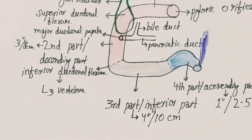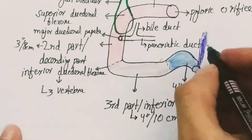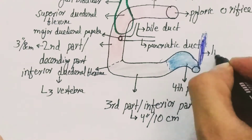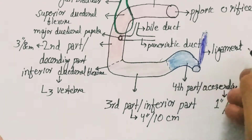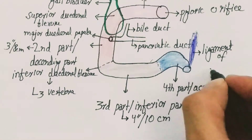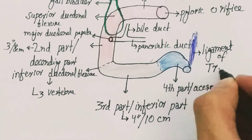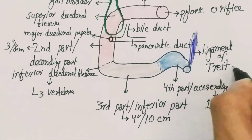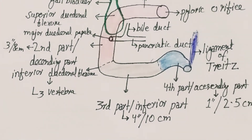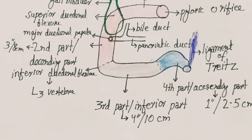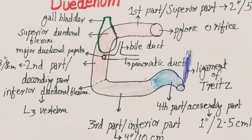The junction between the duodenum and the jejunum is marked by a ligament called the ligament of Treitz. This concludes the overview of the duodenum.